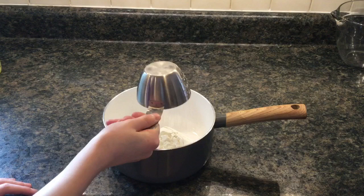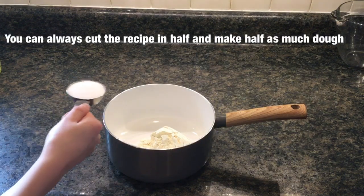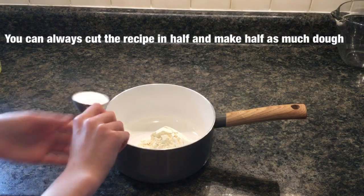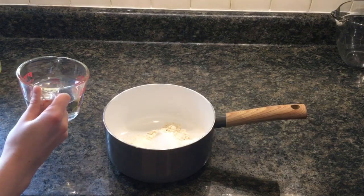Okay, so the first thing we're going to do is we're going to be making our conductive dough. First, one cup of flour. You're going to do one-fourth cup salt, one cup of water.